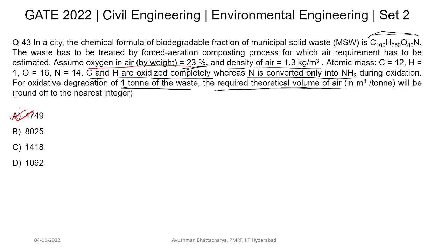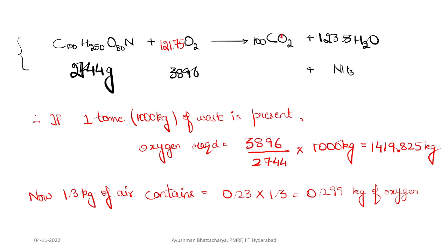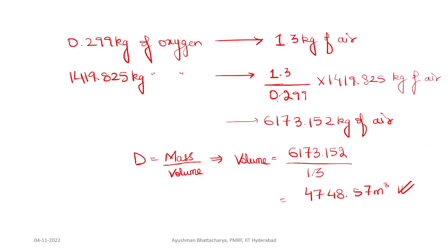To summarize: given the chemical formula of biodegradable municipal solid waste, for one ton of waste we first write and balance the chemical equation, then apply the unitary method to find oxygen required as (3896/2744) × 1000 kg. Using air composition (23% O₂) and density (1.3 kg/m³), we find air mass, then convert to volume using density = mass/volume, giving 4748.57 m³.